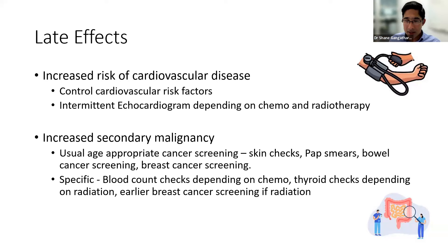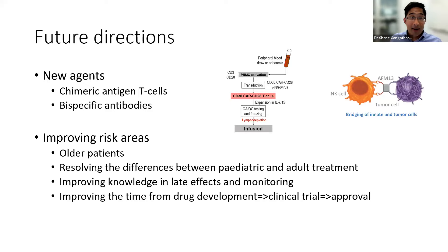Sometimes treatment suggests specific screening: very strong chemotherapy warrants an annual blood check to ensure bone marrow health. Radiation near the neck can damage the thyroid — thyroid levels should be checked periodically. If a female had chest radiation, we start breast cancer screening earlier — eight years after the radiation. There are also newer treatments still being tested and coming out, such as CAR T-cells — chimeric antigen T-cells.